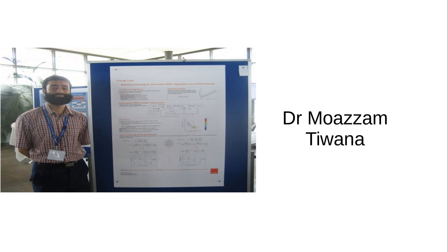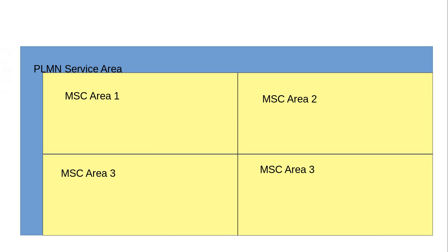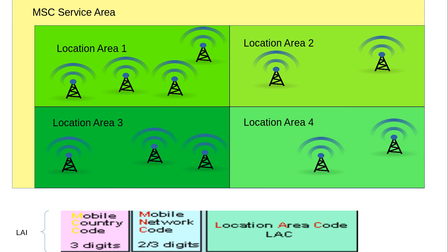Hello, what's up guys, it's Dr. Mozzam Tewana here. In today's class we are going to talk about what are the location areas and what are location area identifiers used to identify them. As we discussed earlier, the service area of a mobile network is divided into MSC areas. Each of these MSC areas is then further subdivided into location areas — for example, location area one, location area two, location area three, and location area four.